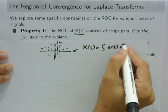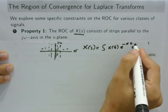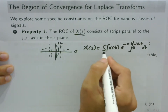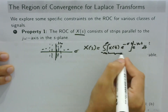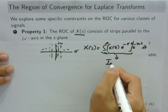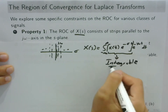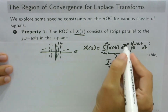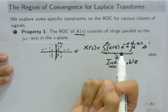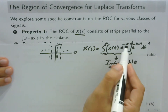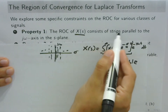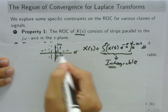The Laplace transform is X(t) · e^(−σt) · e^(−jωt) dt integrated from minus infinity to infinity. For this to converge and be integrable, we need a Laplace transform. In short, the integration depends on the real part of S, which is σ, because σ is the damping factor. Since σ controls convergence, the ROC consists of strips parallel to the jω axis rather than σ.